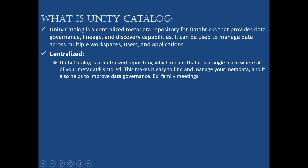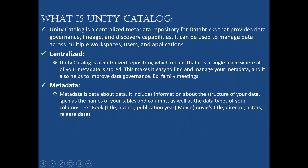Unity Catalog is a centralized repository, meaning it is a single place where all your metadata is stored. This makes it easy to find and manage your metadata and also helps improve data governance — the rules we need to follow to use a workspace. Metadata includes information about the structure of your data, such as table names, column names, and data types. For example, for a book: title, author, publication year. For a movie: title, director, actor, release date.